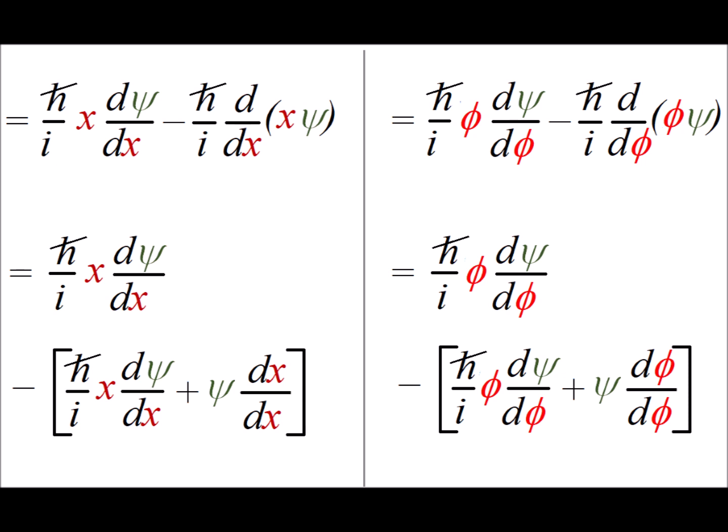On the other hand, if the derivatives you take are not of a product in your calculation, then it will turn out that the operators will commute with each other and the commutator will be equal to zero.